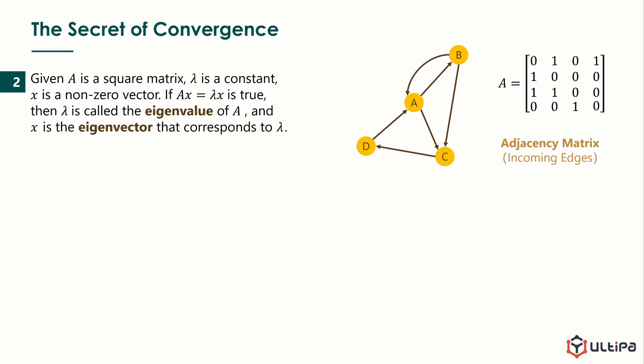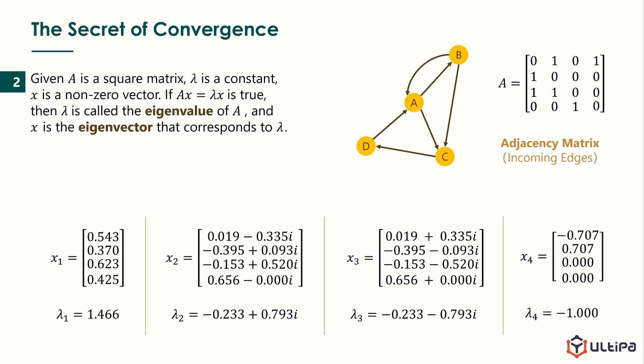Given A is a square matrix, lambda is a constant, x is a non-zero vector. If the equation Ax equals to lambda x is true, then lambda is called the eigenvalue of A, and x is the eigenvector that corresponds to lambda. This adjacency matrix A has four eigenvalues and four corresponding eigenvectors. Interestingly, eigenvector x1 is the same as the stabilized score vector S20.